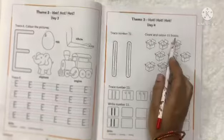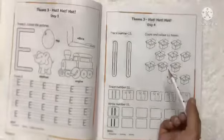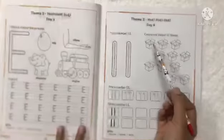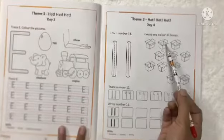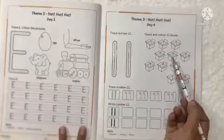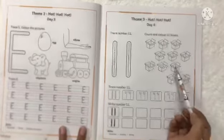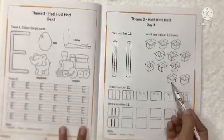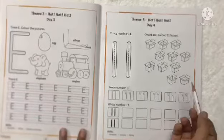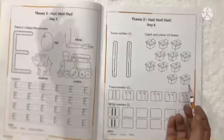Count and colour 11 boxes. These boxes we have to count and then we will colour them. Let's count these boxes. 1, 2, 3, 4, 5, 6, 7, 8, 9, 10, 11. How many boxes are these? These are 11 boxes. After counting them, you will colour them also.